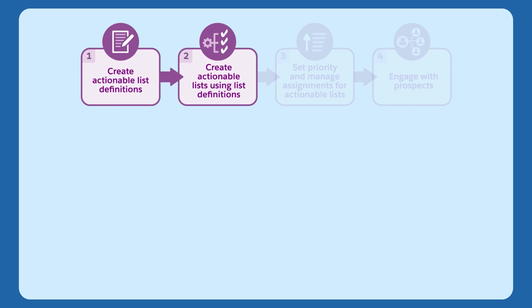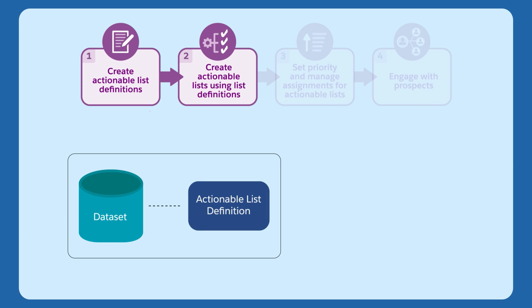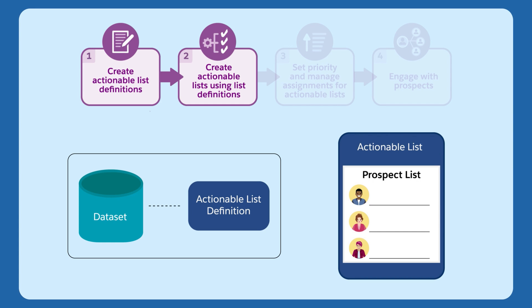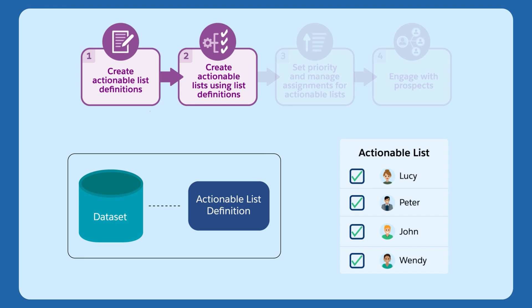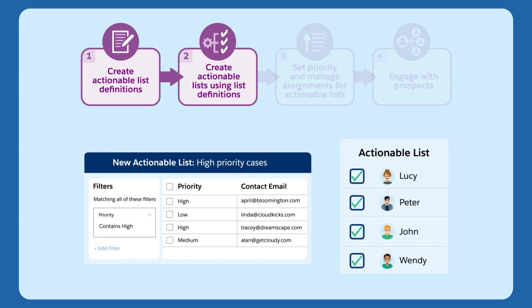Step 2: a sales or service executive creates an actionable list using the list definition. This task is performed by someone who understands the target customer segments or profiles with whom the organization does business. When creating an actionable list, you must specify the actionable list definition created by your admin. The related dataset is used as a data source, and you specify filter criteria to retrieve records that fit the segment.